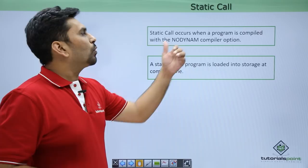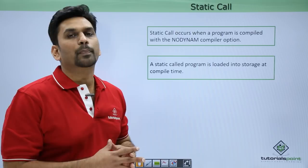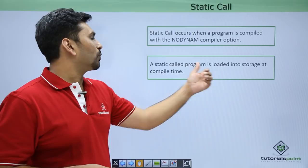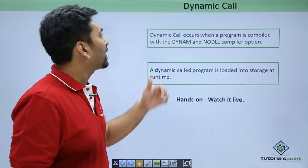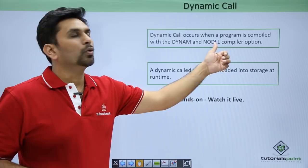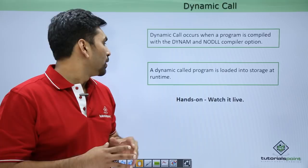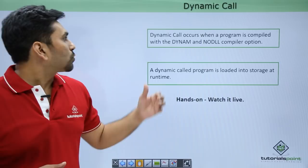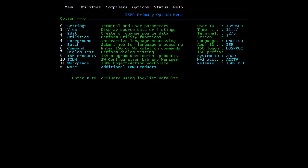A static call occurs when a program is compiled with the NO DYNAM compiler option. This happens when compiling through a JCL where you need to mention the compile options. A static call program is loaded into storage at compile time only. A dynamic call occurs when a program is compiled with the DYNAM or NO DLL compiler option — again you specify this option in the JCL. A dynamic call program is loaded into storage at run time.